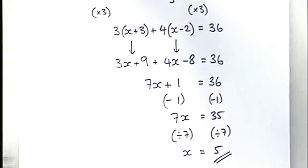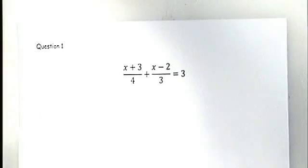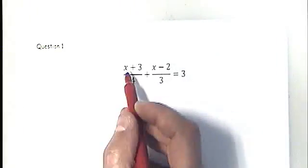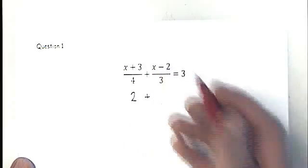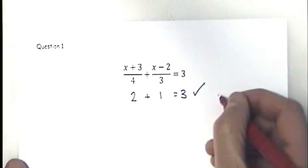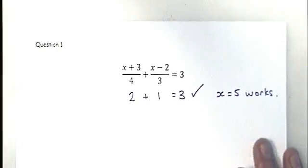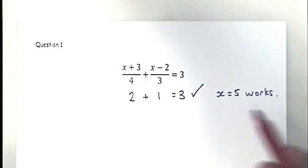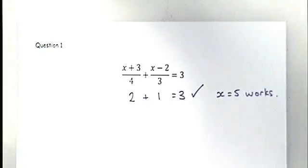You can check by going back to the original question and substituting x = 5. In the first fraction: 5 + 3 over 4 is 8 divided by 4, which is 2. In the second fraction: 5 minus 2 is 3, divided by 3 is 1. And 2 minus 1 does equal 3, so x = 5 works. Whenever you're unsure in an exam or homework, put your number back in place of x and check.